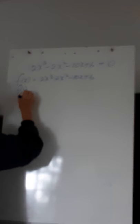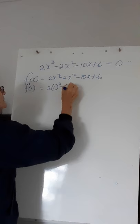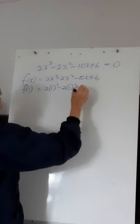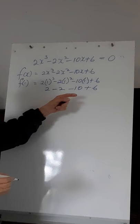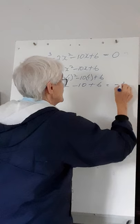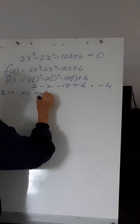I will try to see if f of 1 is equal to 0. If f of 1 is equal to 0, then x minus 1 is a factor. Let's check: f of 1 would be 2 times 1 cubed minus 2 times 1 squared minus 10 times 1 plus 6, which gives 2 minus 2 minus 10 plus 6, giving a remainder of minus 4. Therefore, x minus 1 is not a factor.